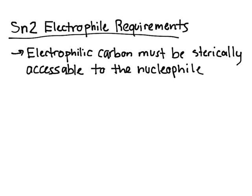In this video, I'm going to talk about SN2 electrophile requirements. Since SN2 reactions are essentially a direct substitution mechanism, which means it occurs in one step, the electrophilic carbon must be sterically accessible to the nucleophile. The nucleophile has to be able to get into contact with the electrophilic carbon — the less stuff in the way, the better. This mostly refers to the bulk on the carbon, meaning how many atoms that carbon is bonded to.